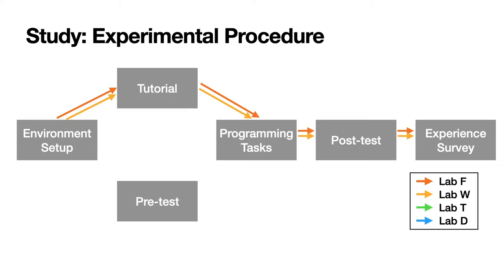Each lab follows roughly the same procedure, with some variations due to the different experimental designs. Students started the lab by accessing the environment through their browser, then watched tutorial videos of how to use the respective environment before starting the programming tasks. The tutorial videos would remain accessible to them as they worked. After the tasks, they did a post-test where they answered multiple choice questions on topics covered in the lab. Finally, they commented on their experience with the environment in an experience survey.